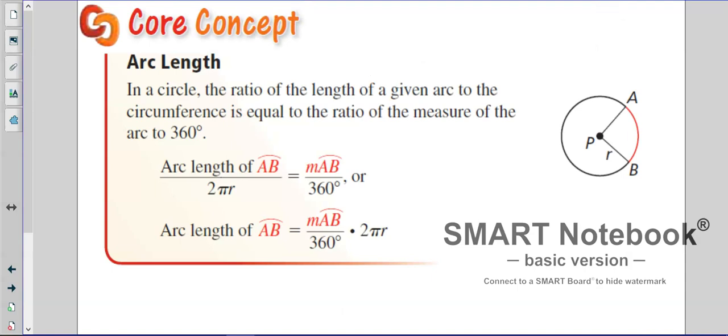Arc length. In a circle, the ratio of the length of a given arc to the circumference is equal to the ratio of the measure of the arc. So we've been dealing with measures of arc so far, and we're going to bring it into this. So it's pretty easy. Basically, it's just the measure of the arc divided by 360. Or you can see arc length divided by 2 pi r. There's a lot of different ways of doing it.